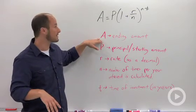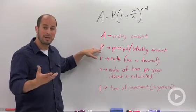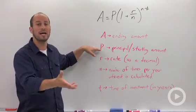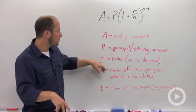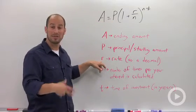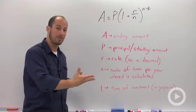A is just going to be your ending amount. P stands for principal, another way of saying starting amount. So if you invest $2,000, P would be $2,000. Rate is going to be your percent interest. So say you get 4%, you always need to put it in as a decimal, so that 4% becomes 0.04.